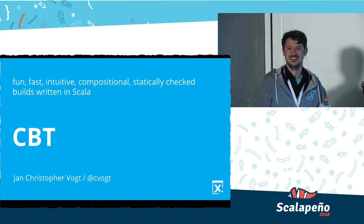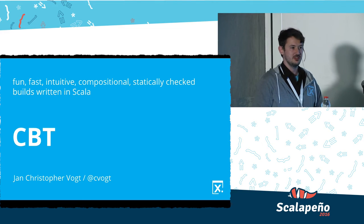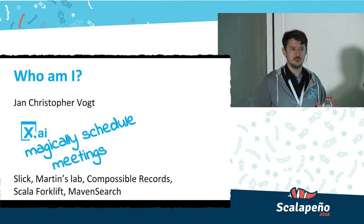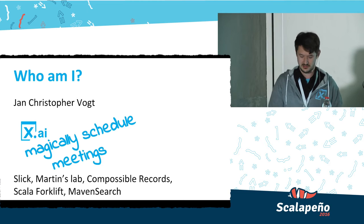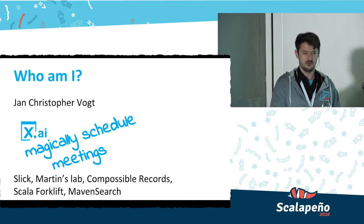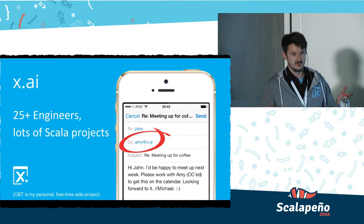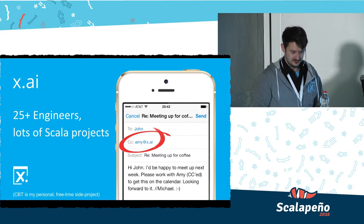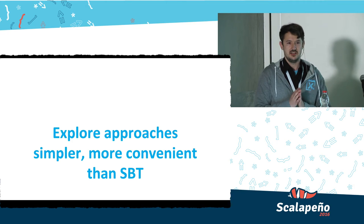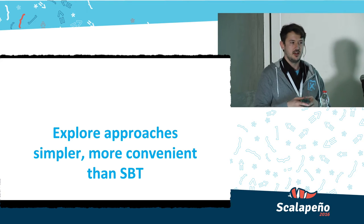Hi, I'm Jan-Christopher Vogt. I work at a company called X.AI in New York City where we magically schedule meetings with artificial intelligence. You may know me — I co-authored Slick, worked in Martin's lab for a few years, and I've done the composable records library, was involved in Scala Forklift and Maven Search. We're 25 engineers at X.AI with a lot of Scala projects, and that's why I started working on CBT.